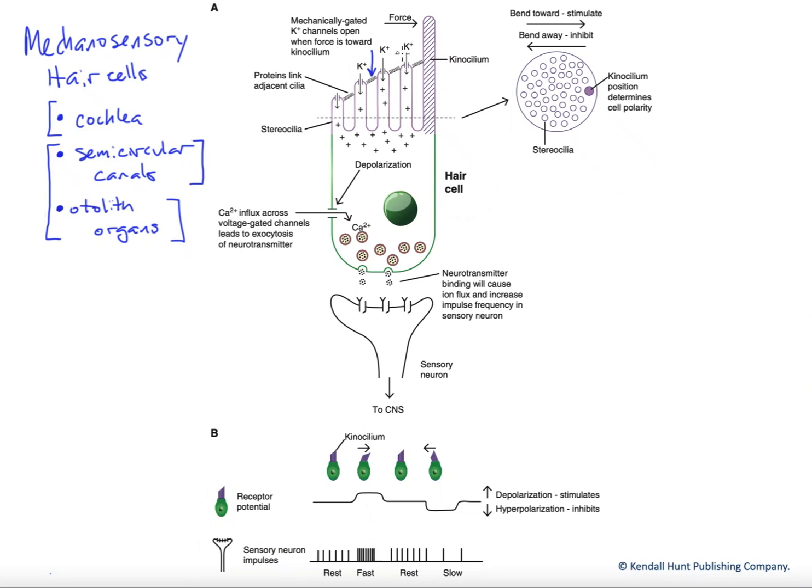If you look at them from the top, over here on the right, you can see all of our stereocilia, the open circles adjacent to this kinocilium all on one side. We're going to get bending either toward or away from the kinocilium.